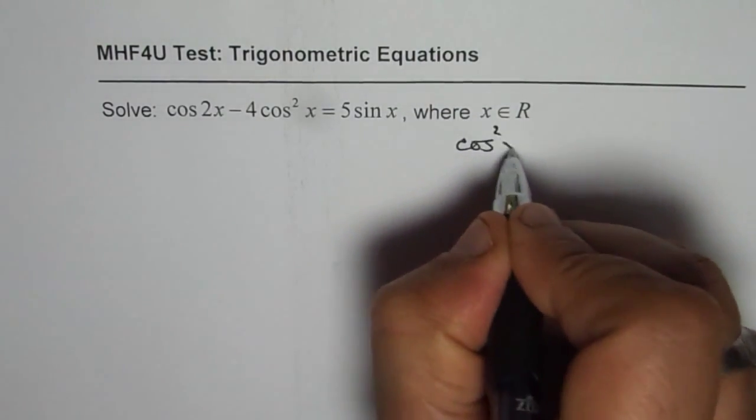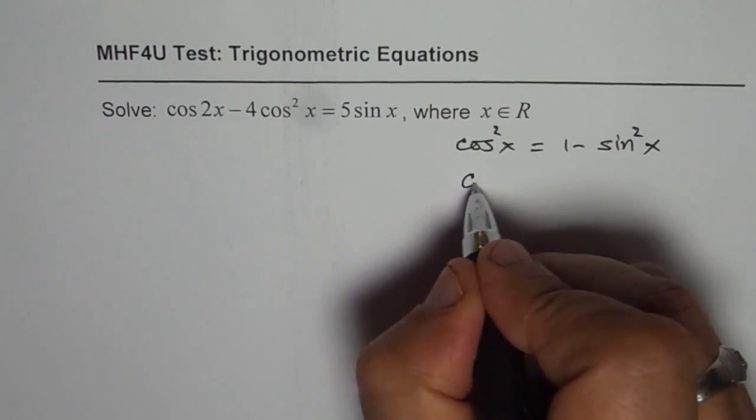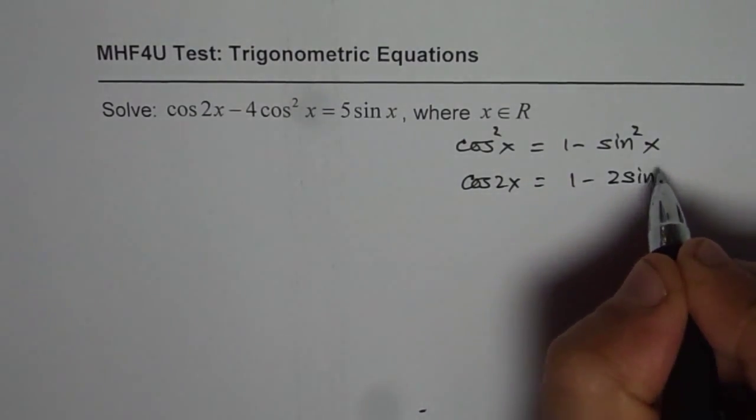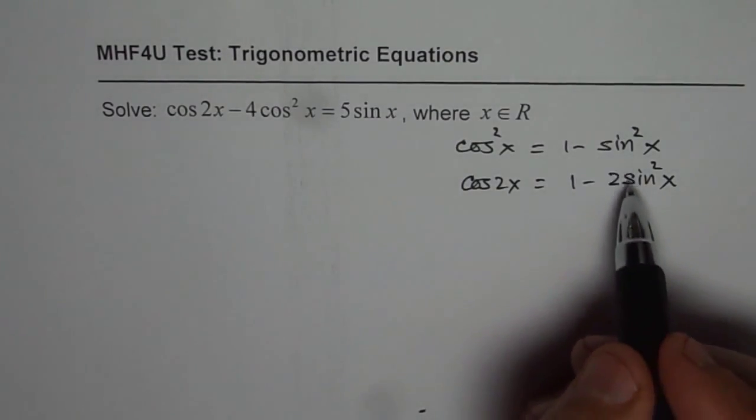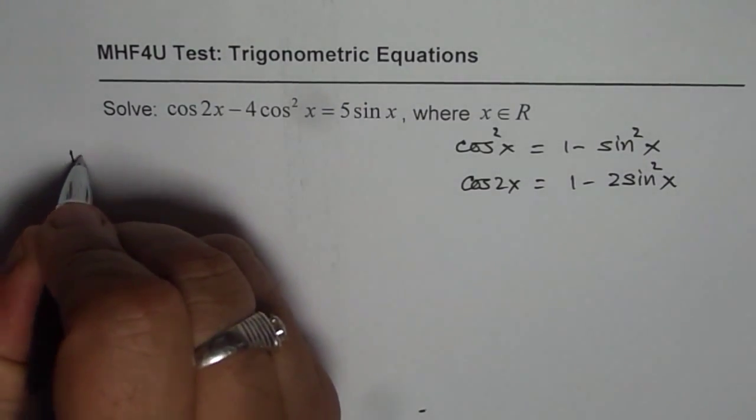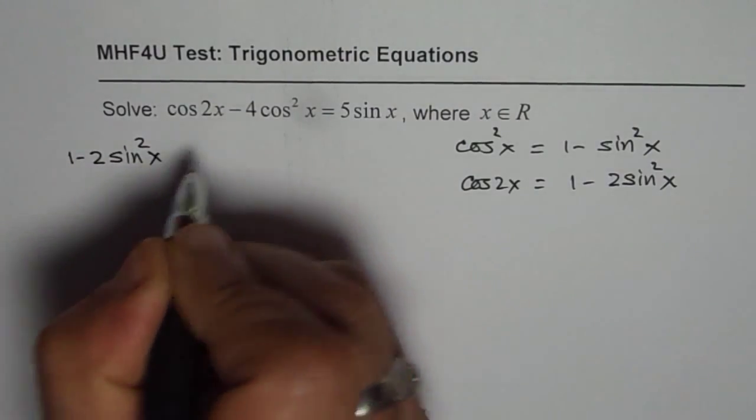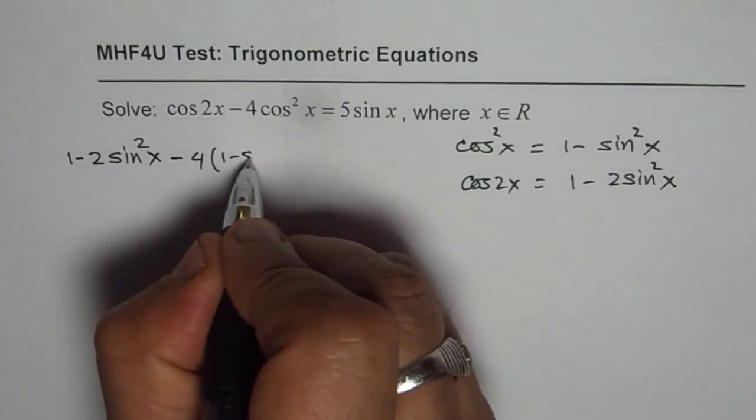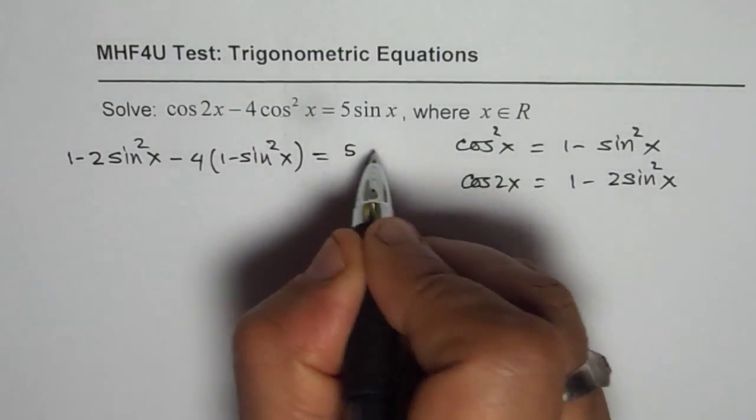We can write cos square x as 1 minus sine square x and cos 2x as 1 minus 2 sine square x. Let us substitute these values and solve. So, cos 2x I am writing as 1 minus 2 sine square x, and we have 4 times cos square x as 1 minus sine square x equals 5 sine x.